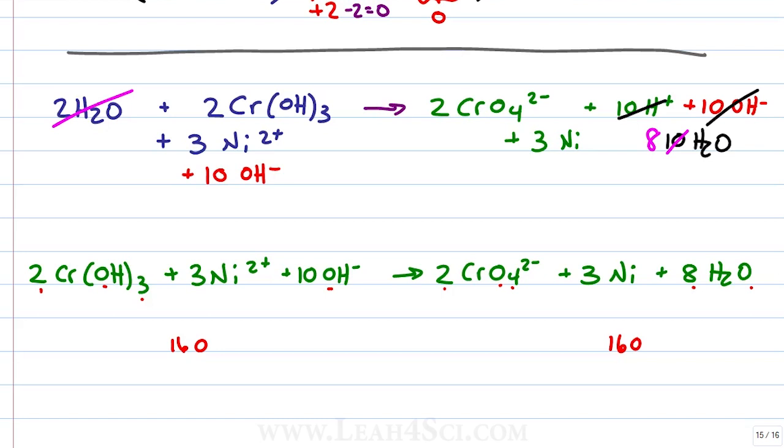And sometimes when it's complicated, I do write the numbers down just to make sure I don't forget what I said. Hydrogen, we have 3 hydroxide times 2 is 6 plus another 10 hydroxides giving me 16. On the product side, we have 2 times 8 which is also 16 and 3 nickels, 3 nickels.